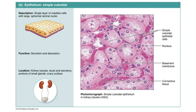The simple cuboidal epithelium is a tissue that contains a single layer of cube-shaped cells, and it is found in places where absorption and secretion are important. They are found in places like the kidney tubules, where the body absorbs what it needs from the waste that will eventually become urine. It's also found in glands, as these cells produce the secretions of that particular gland.